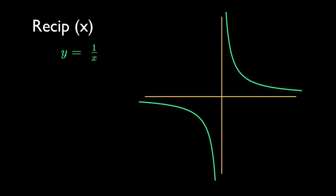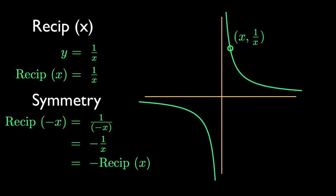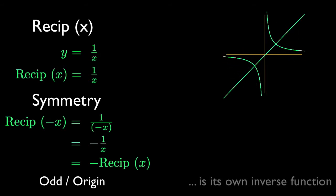Our next library function is the reciprocal function, our first discontinuous example. Its equation is y equals 1 over x, which means its graph consists of the points x, 1 over x. Check its symmetry algebraically by plugging in negative x, and confirm what's visually obvious — that the reciprocal function is an odd function with origin symmetry. This function has another important symmetry: it's symmetric around the line y equals x, the graph of the identity function. This means the reciprocal function is another example of a function that is its own inverse.